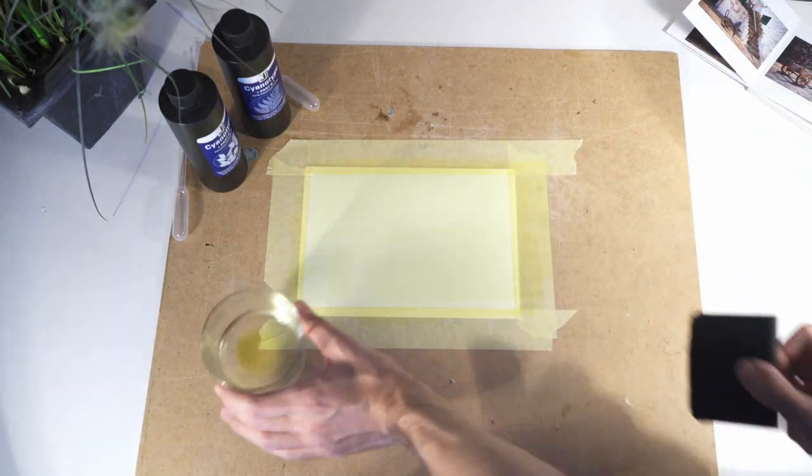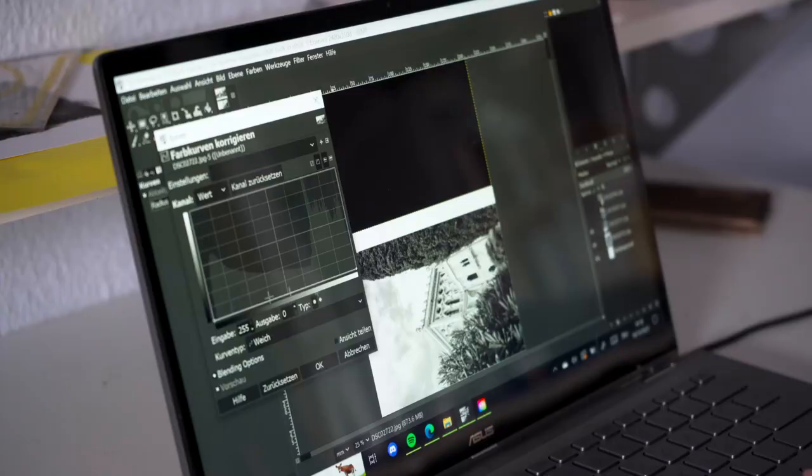I started by creating a normal blue print. To do that I made four new digital negatives. I then printed them onto some transparent film.